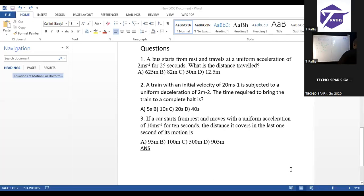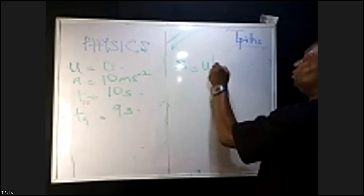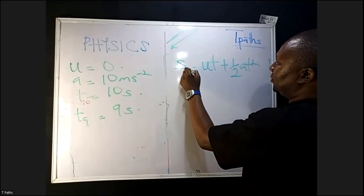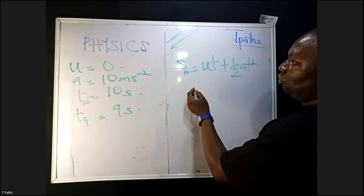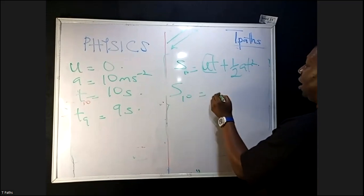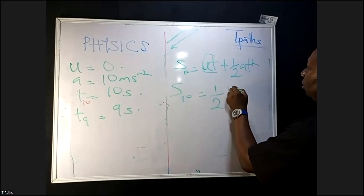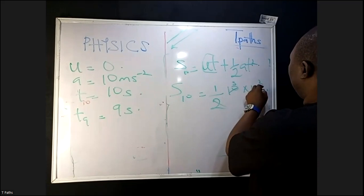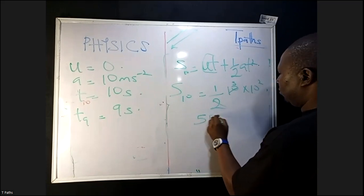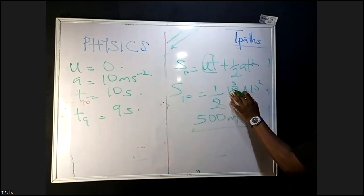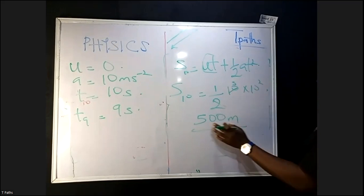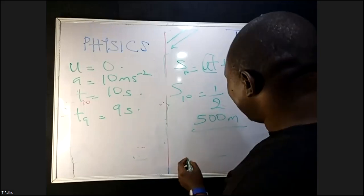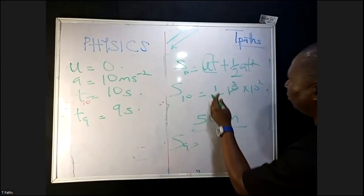We have to use the third equation: S = UT + ½AT². For S₁₀, U is zero so that term goes. S₁₀ = ½ × 10 × 10² = 5 × 100 = 500 meters. That is the distance covered in 10 seconds.